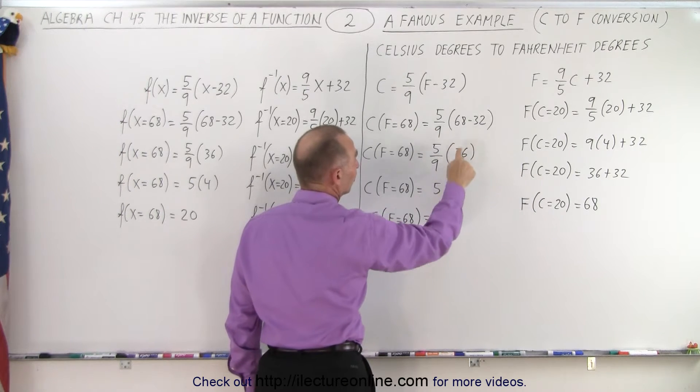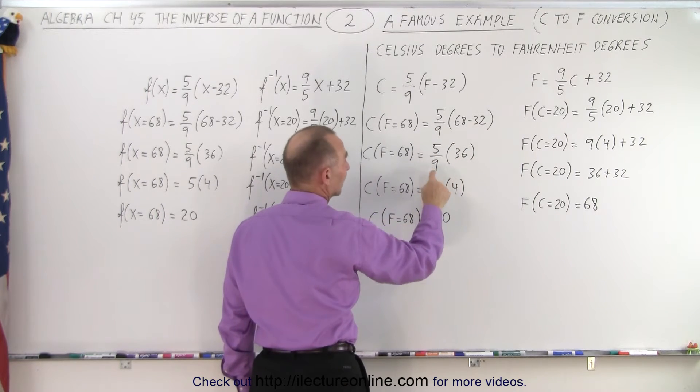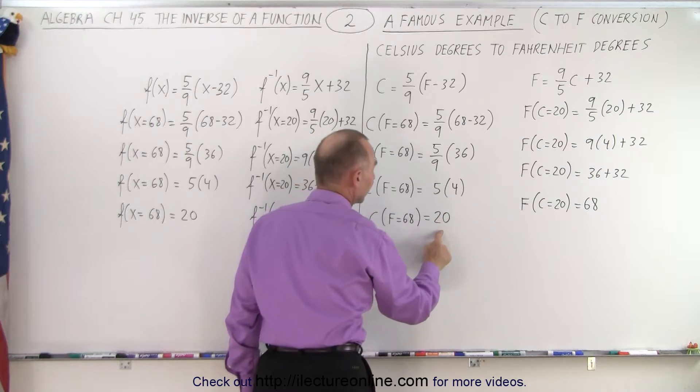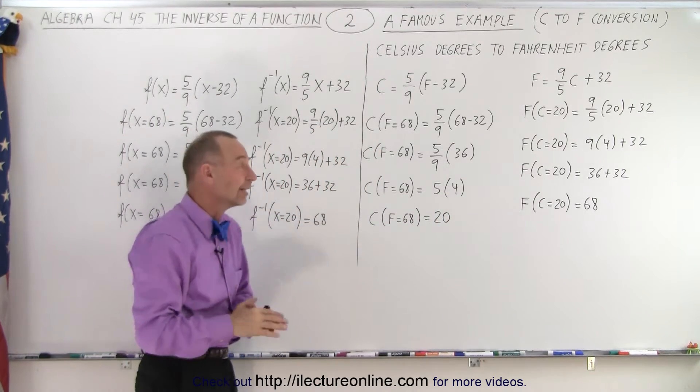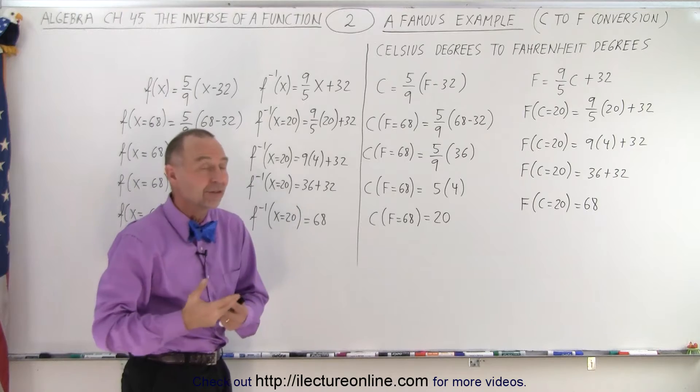68 minus 32 is 36. 36 divided by 9 is 4. 5 times 4 is 20. In other words, 68 degrees Fahrenheit is equal to 20 degrees Celsius.